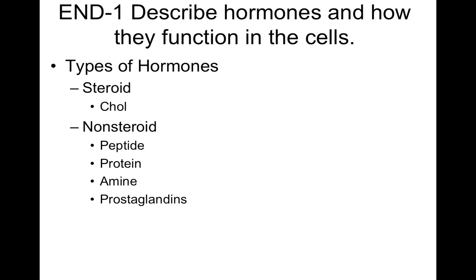There are a couple of different types of hormones. Steroid hormones are mainly based off of cholesterol. Peptide hormones are short chains of amino acids — remember, amino acids are what make up proteins — and they're produced in smaller places like the pituitary gland in the brain. Protein hormones are longer chain hormones, and amine hormones are based off of the amino acid tyrosine.